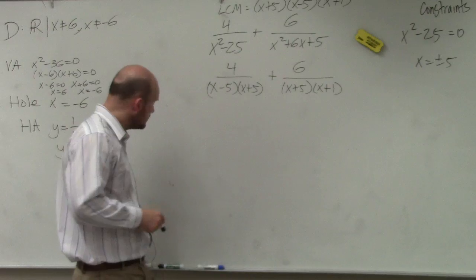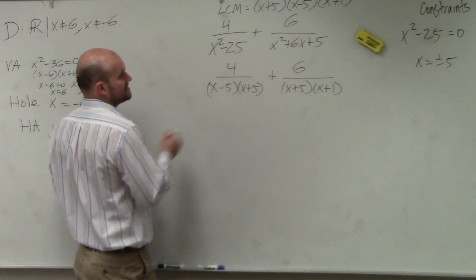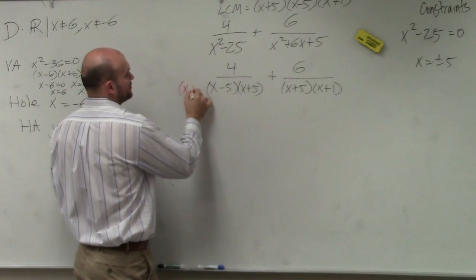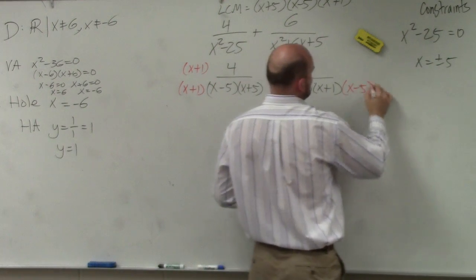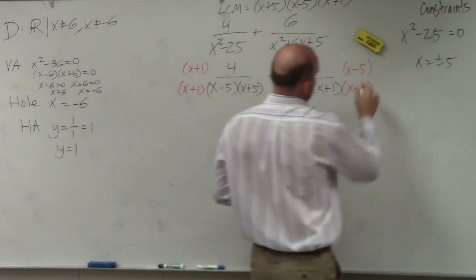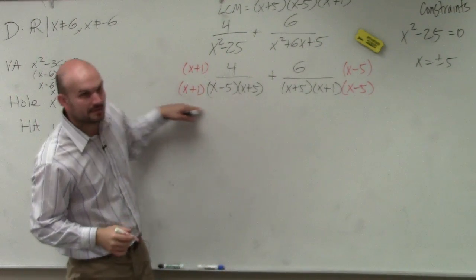So now we just need to get this to be the common denominator. So therefore, I'd multiply this by x plus 1 on both sides. And here, I'd multiply by x minus 5.